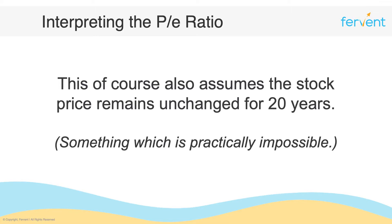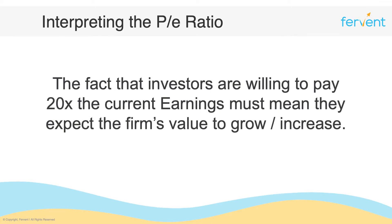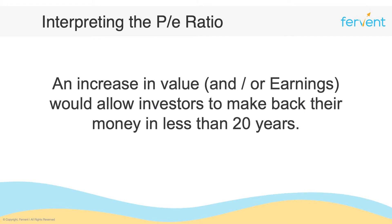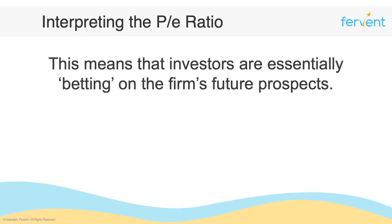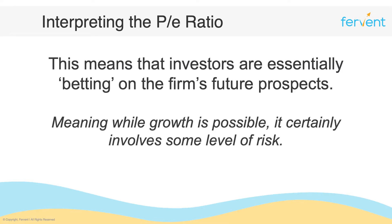The fact that investors are willing to pay 20 times current earnings must mean they expect the firm's value to grow substantially more than what they're paying. Investors are either expecting the firm's earnings to grow, or the firm's value to increase, or both — because an increase in value and/or earnings would allow investors to make back their money in less than 20 years. This means investors are essentially betting on the firm's future prospects, and while growth is possible, it involves some level of risk because the future is not guaranteed.